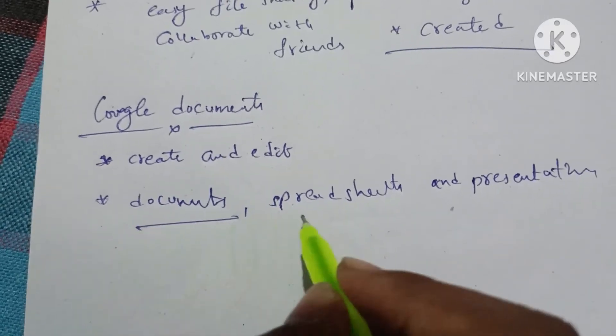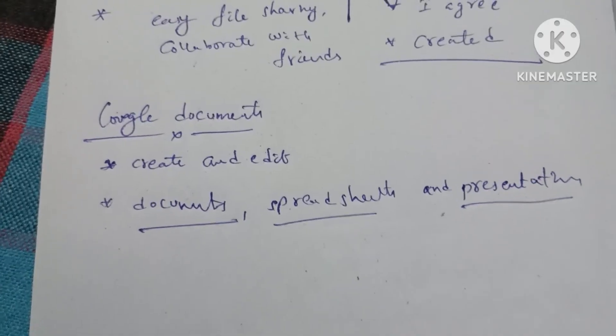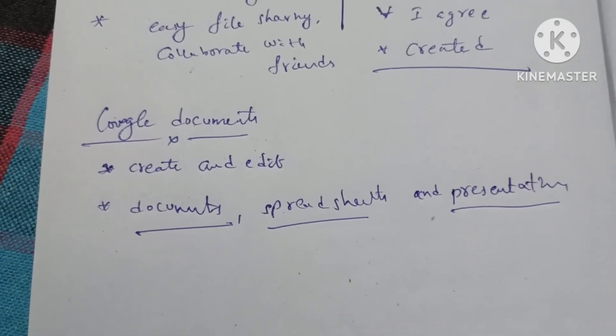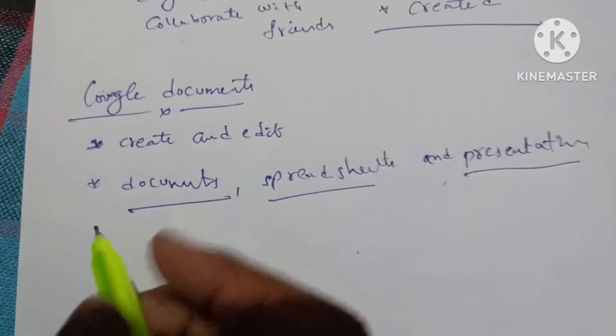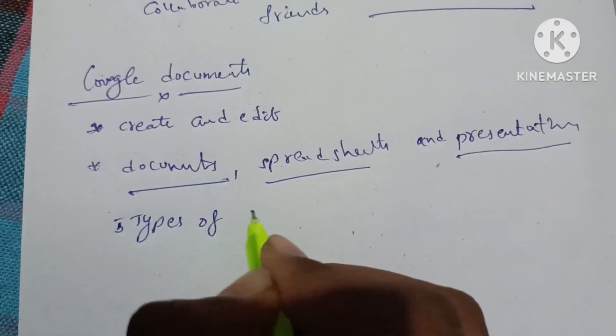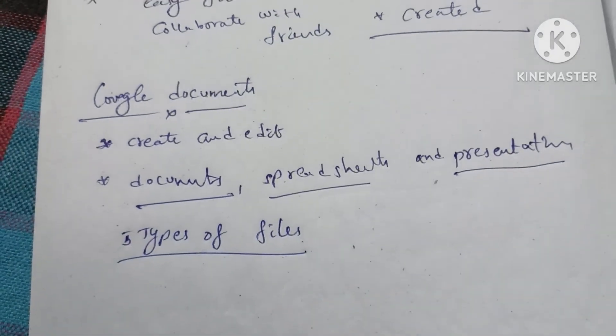There are documents, spreadsheets, and presentations. We will look at these three types. How many types of files are in Google Documents? Five types of files total.